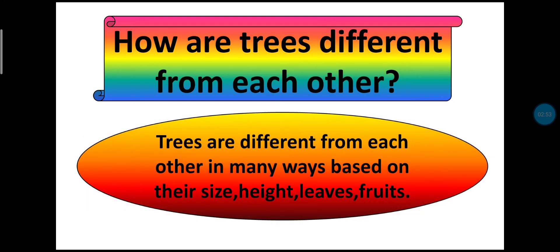How are trees different from each other? Trees are different from each other in many ways, based on their size, height, leaves and roots.